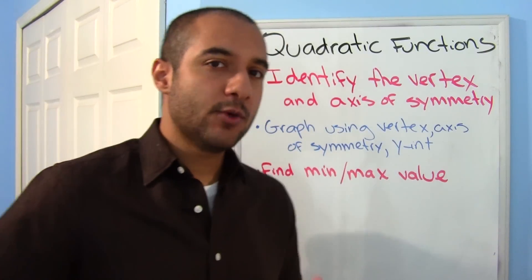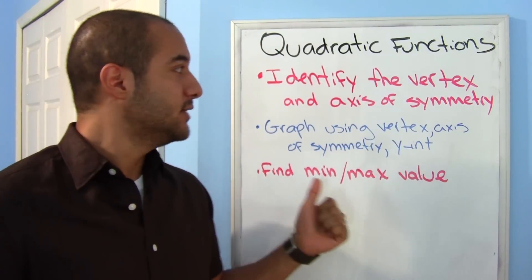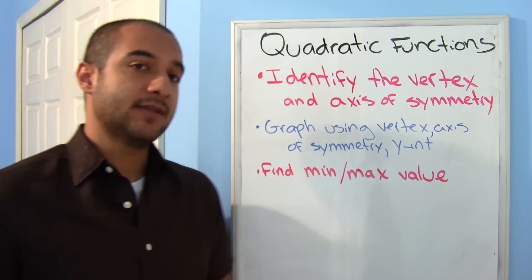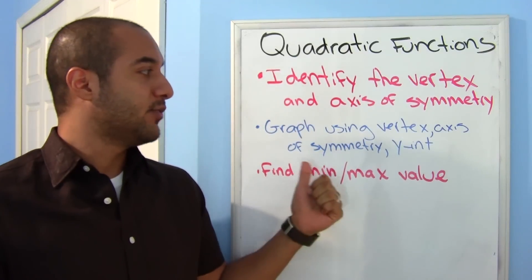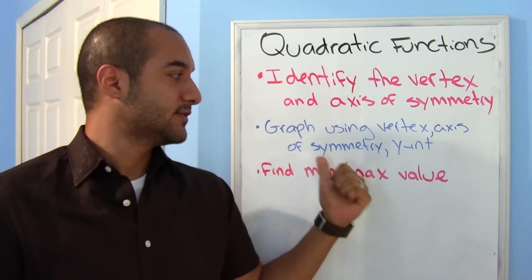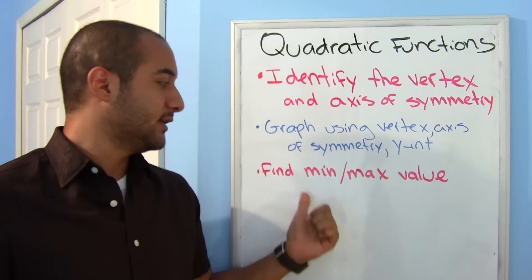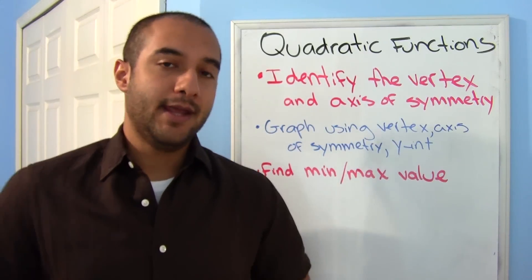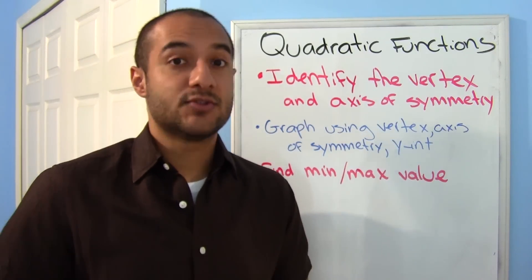Hello ladies and gentlemen, welcome back. Today we'll be looking at quadratic functions. We'll be identifying the vertex and the axis of symmetry. We'll be graphing them using the vertex, the axis of symmetry, and the y-intercepts. And finally, we'll find the minimum and the maximum values. Let's get started.